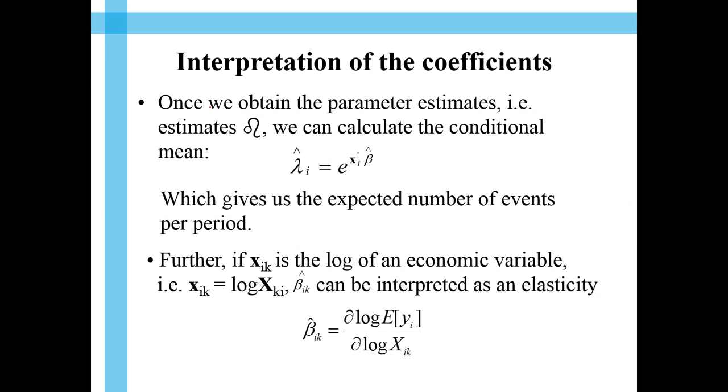And, how do you interpret the coefficient? Once we have obtained the parameter estimates, we can calculate the conditional mean. Conditional mean as in, when you have already given the independent values of the independent variable, you can put in the value. And, with the given estimate, estimated value of beta, you can find out the estimated value of lambdas.